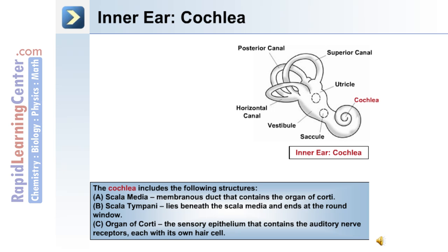Within the inner ear is the cochlea, made up of the following structures: the scala media, which is the membranous duct that contains the organ of corti; the scala tympani, which lies beneath the scala media and ends at the round window; and the organ of corti, which is sensory epithelium that contains the auditory nerve receptors, each with its own hair cell.